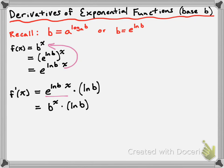So replacing e to the power of ln of b times x by b to the power of x gives us b to the power of x times the ln of b. This is how we more traditionally write the derivative of an exponential function with a base of b. The derivative of b to the power of x is itself multiplied by the ln of b, where ln of b is some constant number. Going back to the earlier video where we investigated the derivative of an exponential function with a base of b from first principles — we couldn't finish it, but I pointed out that the derivative was equal to itself multiplied by a constant. It turns out that constant is just the ln of b.